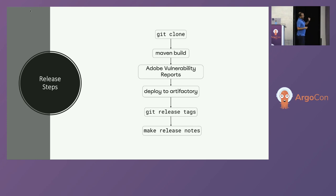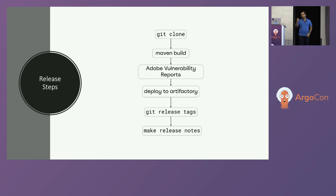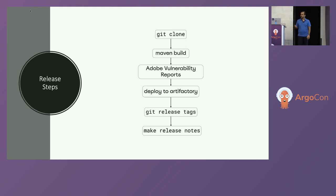The release itself is pretty straightforward: we pull a repo, do a Maven install to make sure the build works, then publish to an internal Adobe vulnerability dashboard where, based on the POM and the dependency, we get ticketed if there's a vulnerable library and go back and fix it. Then we deploy to Artifactory and do the basic release notes and all the stuff that any open source library does.